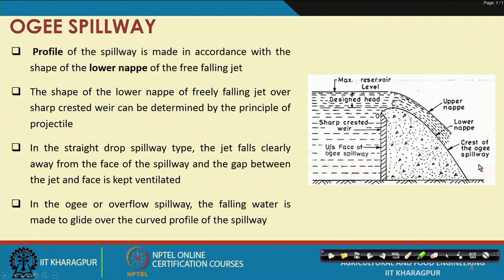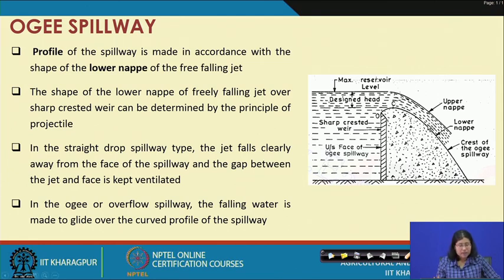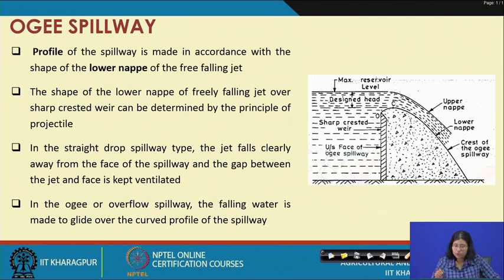The shape of the lower nappe of a freely falling jet over the sharp-crested weir can be determined by the principle of projectile. In the straight drop spillway type, the jet falls clearly away from the face of the spillway and the gap between the jet and the face is kept ventilated.